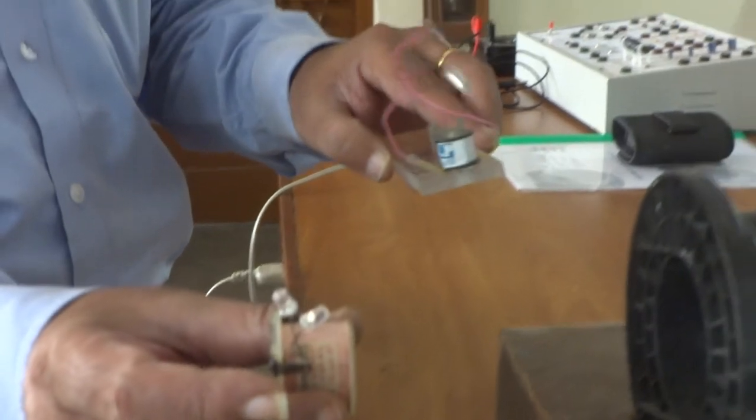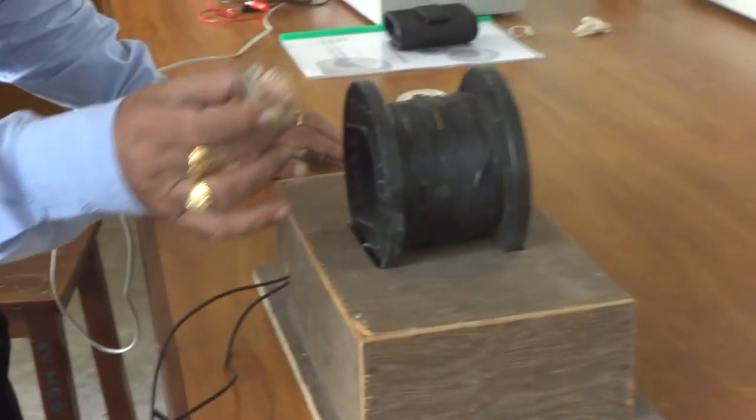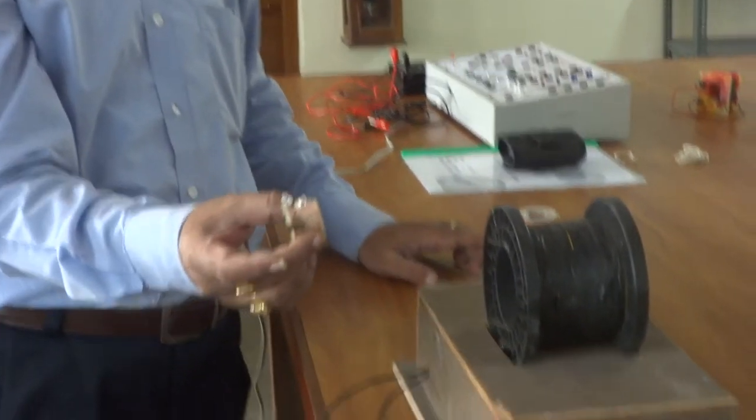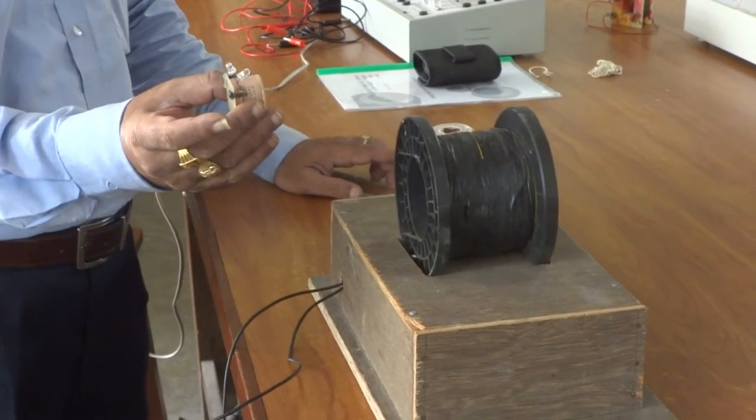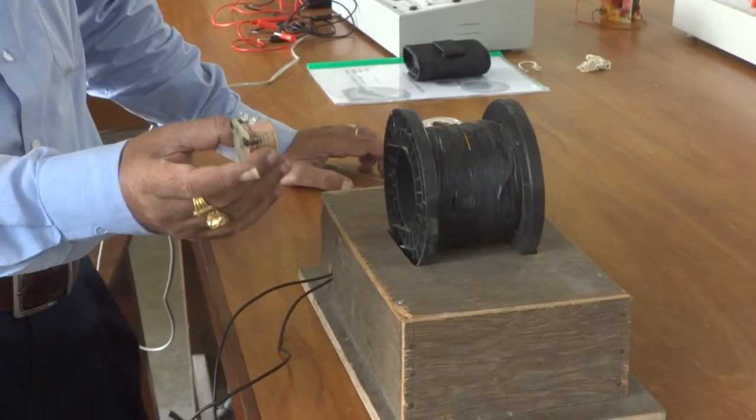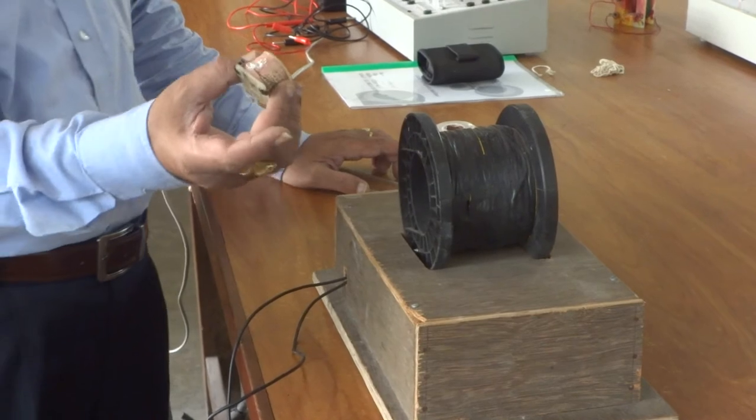Now when current passes through the primary coil, it induces flux in the secondary coil. Because it is AC, the flux is continuously changing. Because of this change of magnetic flux, we can induce EMF in the secondary coil.